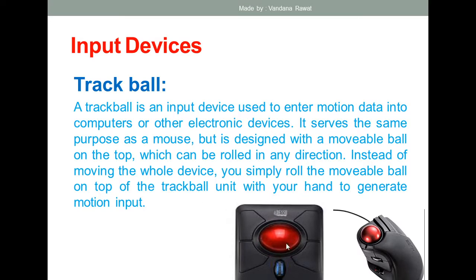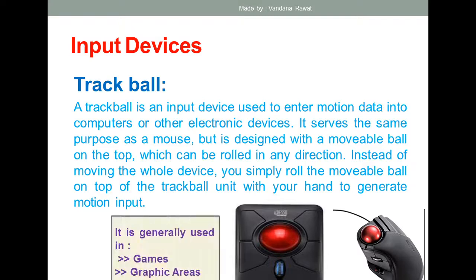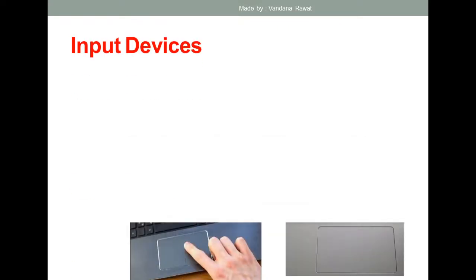The ball of a trackball can be rolled in any direction. Instead of moving the whole device, you simply roll the movable ball on top of the trackball unit. This is one advantage over the mouse — it takes less area to move. The next input device is the touchpad.